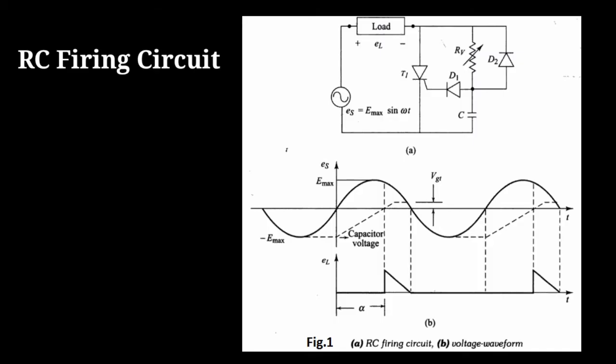Figure shows the RC, that is resistance-capacitance half-wave trigger circuit. By the RC network, a larger variation in the value of firing angle can be obtained.